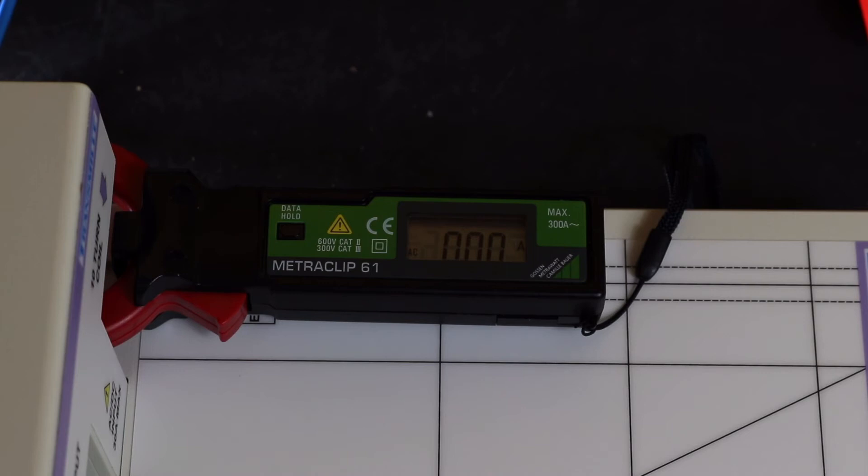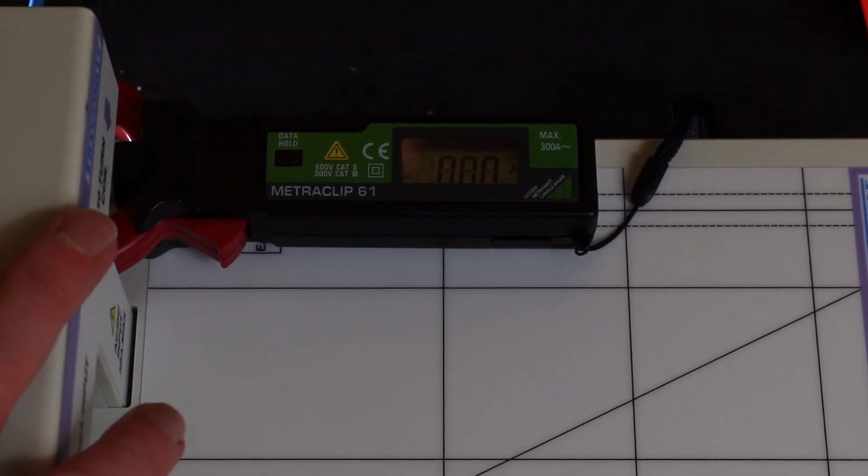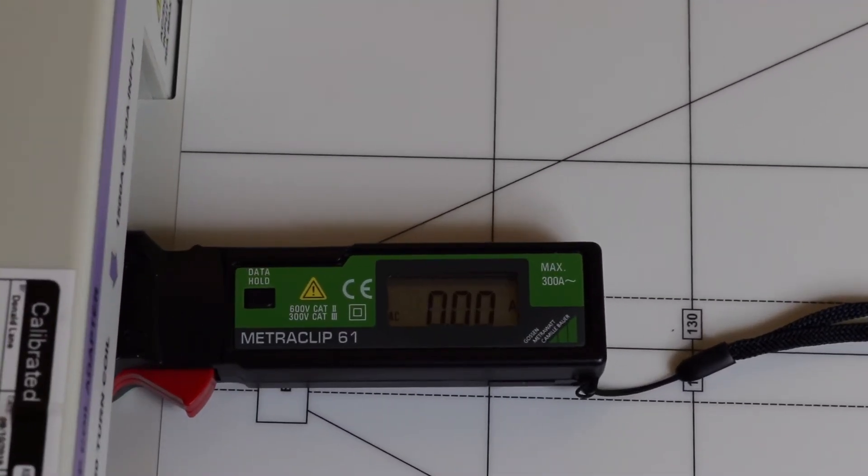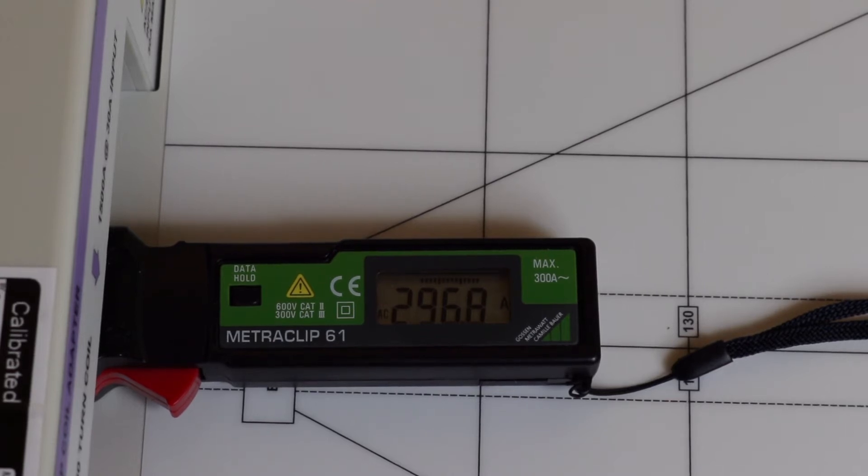I'm just going to flip this over and put it onto the central coil and take this up to its max 300 amps. Okay so we've just reset this onto the center coil. So this is now a 50 to 1 amp coil. So I put 6 amps in to get 300 amps out and we're reading 296.8.